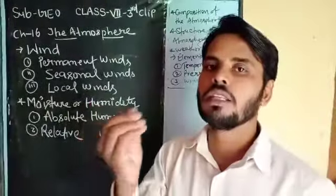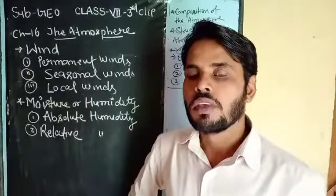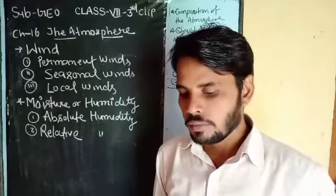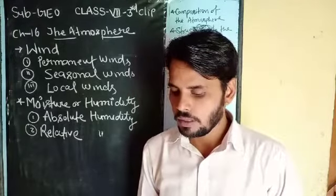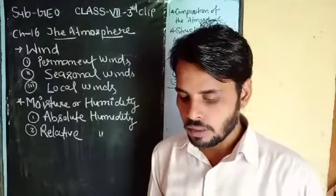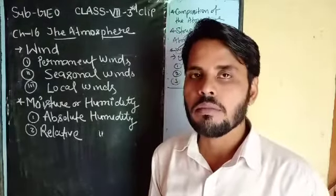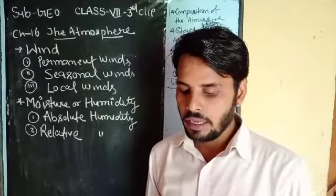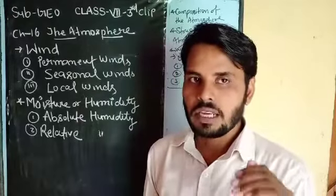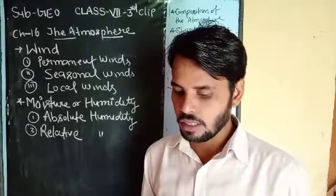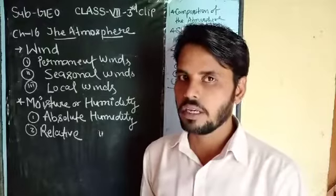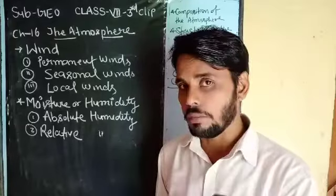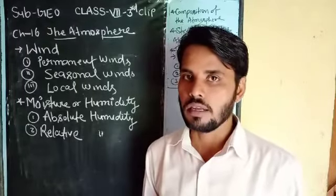Moisture और humidity — दोनों का मतलब same होगा, दोनों का मतलब होता है नमी। Humidity refers to the content of water vapor present in air in gaseous form at a particular time and place. हवा में water vapor जो gas के form में present होता है, किसी particular time में या किसी particular जगह में — हवा में water vapor की जो मात्रा होती है, उसे ही humidity कहा जाता है।